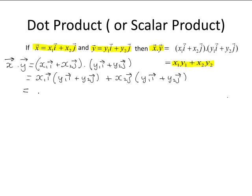This gives you x1y1i dotted with i plus x1y2i dotted with j plus x2y1j dotted with i plus x2y2j dotted with j. This is equal to x1y1.